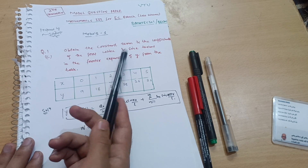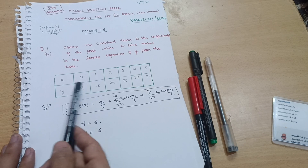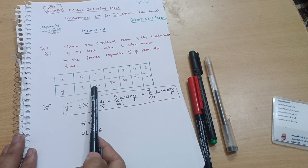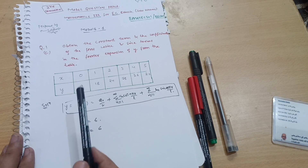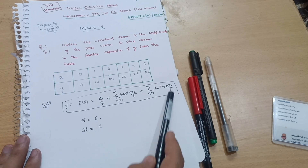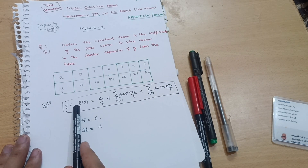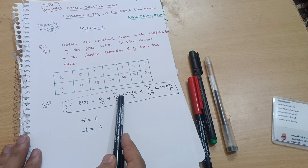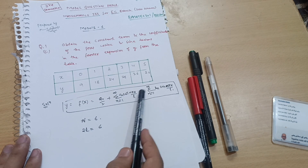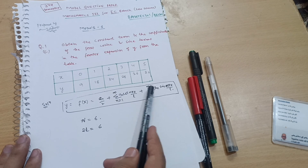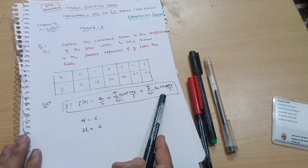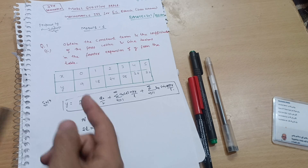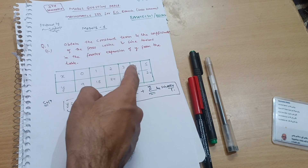The given data is x and y: x is 0, 1, 2, 3, 4, 5 and y is 9, 18, 24, 28, 26, 20. You have to remember this Fourier series expansion: f(x) = a₀/2 + summation of aₙ cos(nπx/l) + summation of bₙ sin(nπx/l). That is the general formula for the Fourier series for the cosine and sine terms.